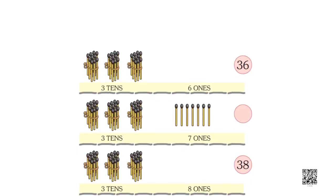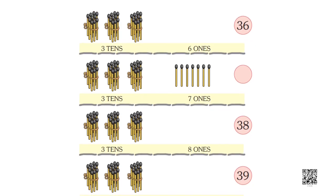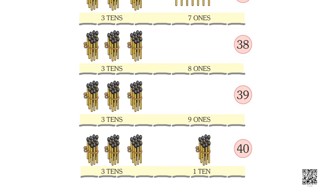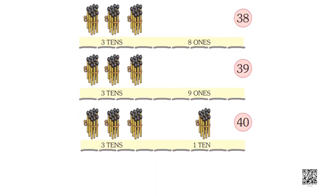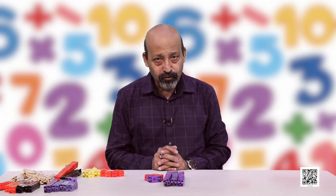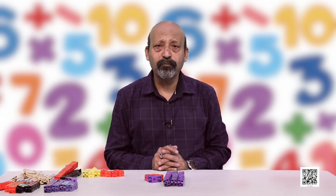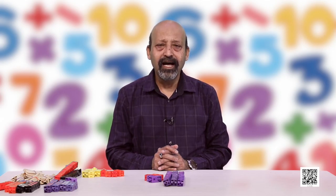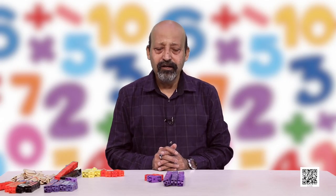Now write all these numbers as shown on the slide. There are some blanks — fill them up. You have to do it in two different ways. Number one: write numbers from 1 to 50 in continuation — meaning 1, 2, 3, 4, 5, then 10, 11, 12, 13, 14, then 20, 21, 22, 23, 24, then 30, 31, 32, 33 and so on up to 50.